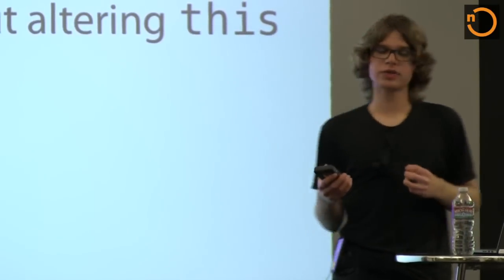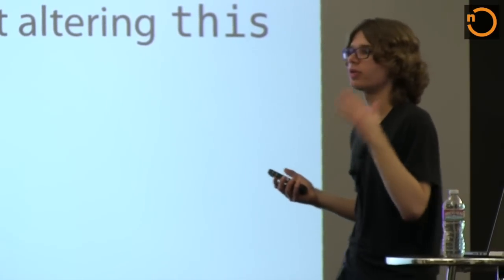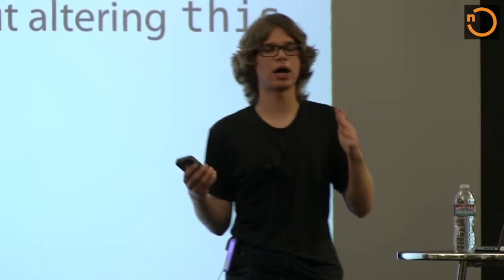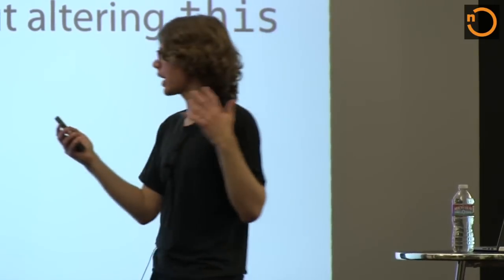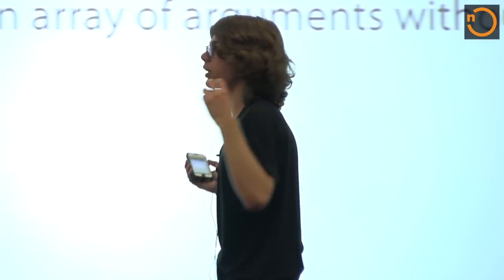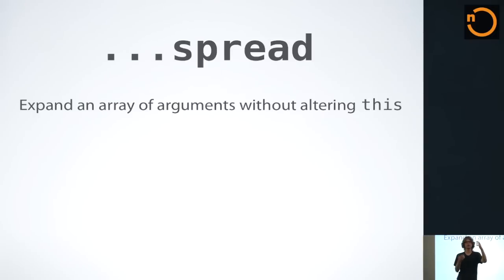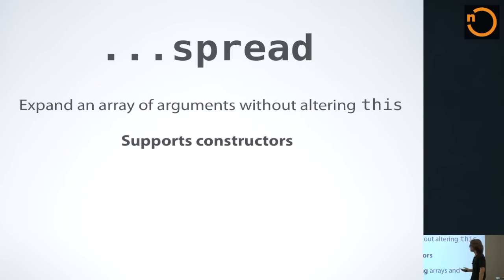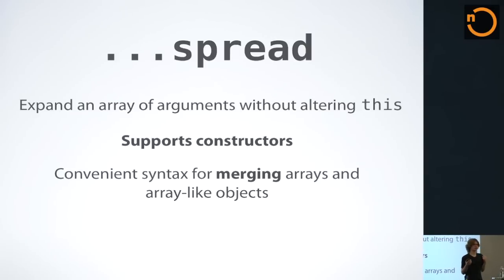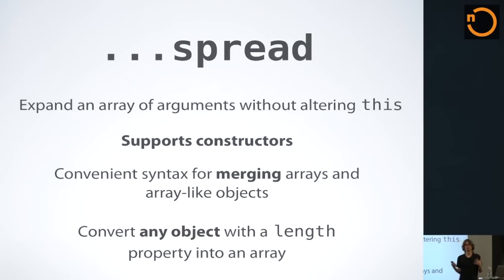The next two features I wanted to cover work best in unison. First up is spread. Spread allows you to expand the value of an array of arguments without altering the this context. You can think of it as a better function prototype apply, but function apply has some weaknesses. Namely, it can't be used out of the box with constructors. So we now have a syntax for unpacking an array of arguments and applying it for instantiating a constructor or for calling a regular method. It's also a great syntax for merging arrays and array-like objects.